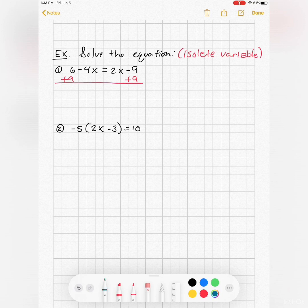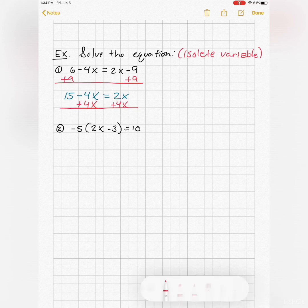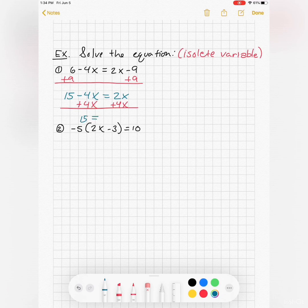I have some options. Maybe I start by adding a nine to both sides. So I have to work with my like terms. Six plus nine is 15. Bring the rest of the equation down. Now how about I add this 4x to both sides? So then I have 15 equals 6x.